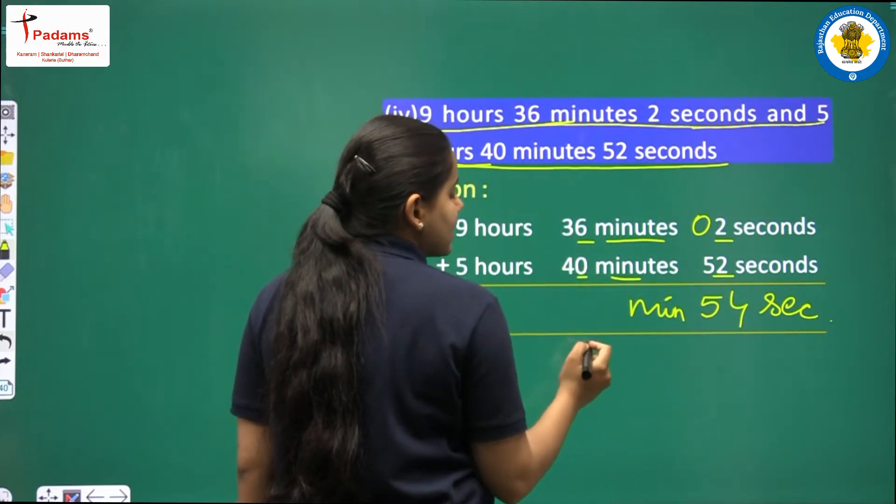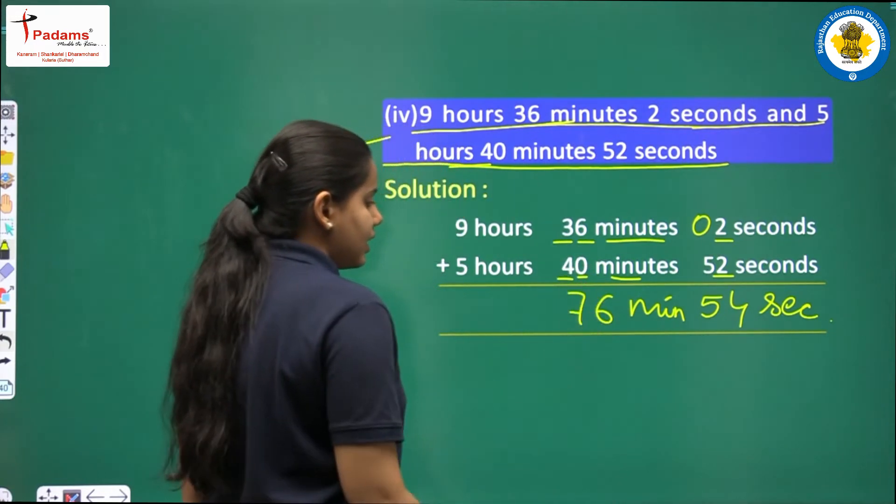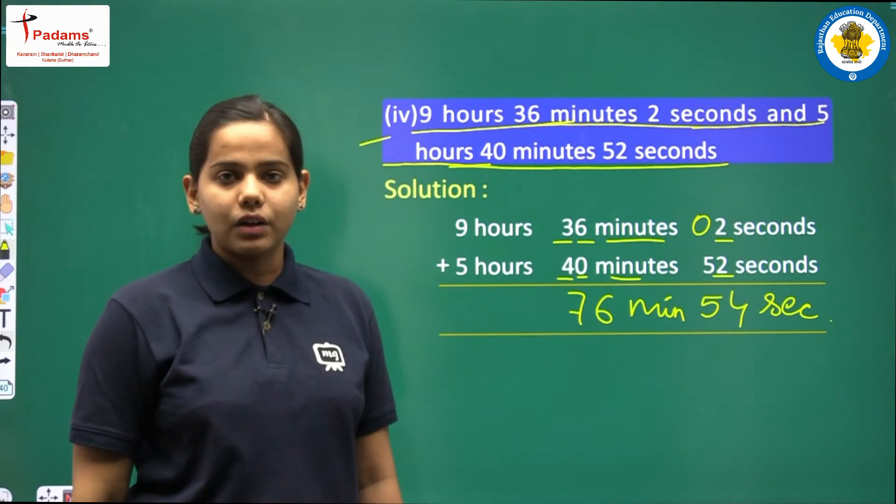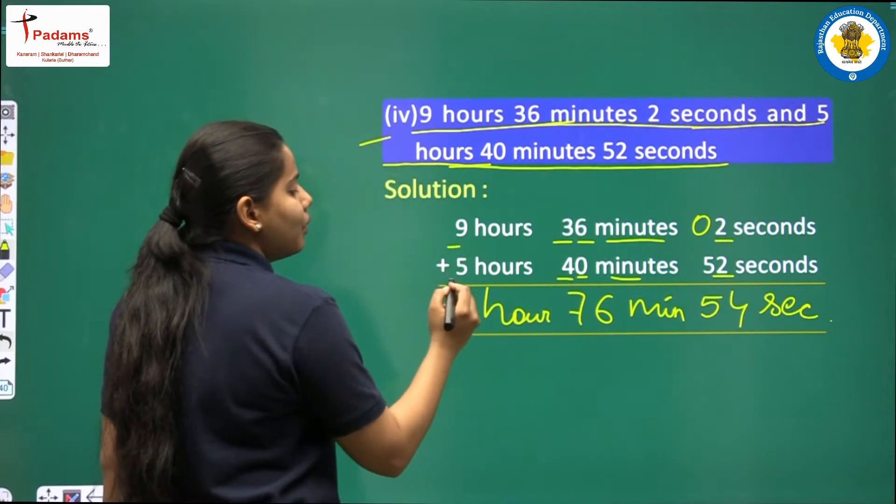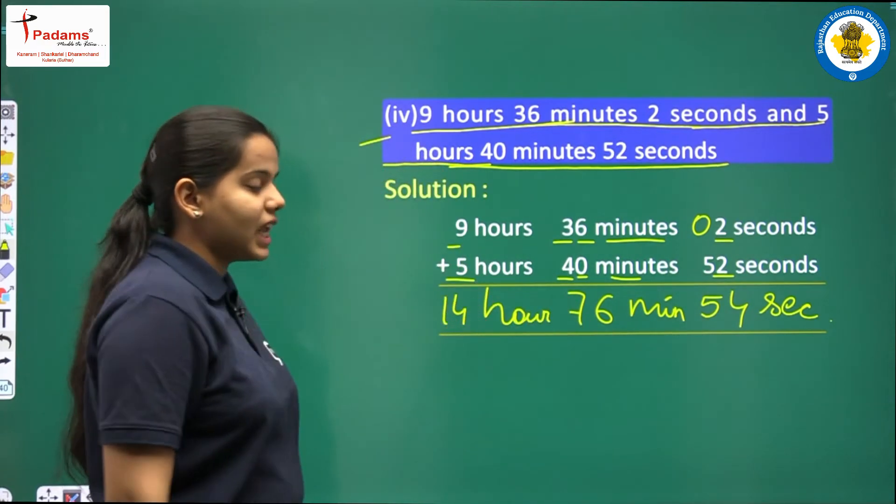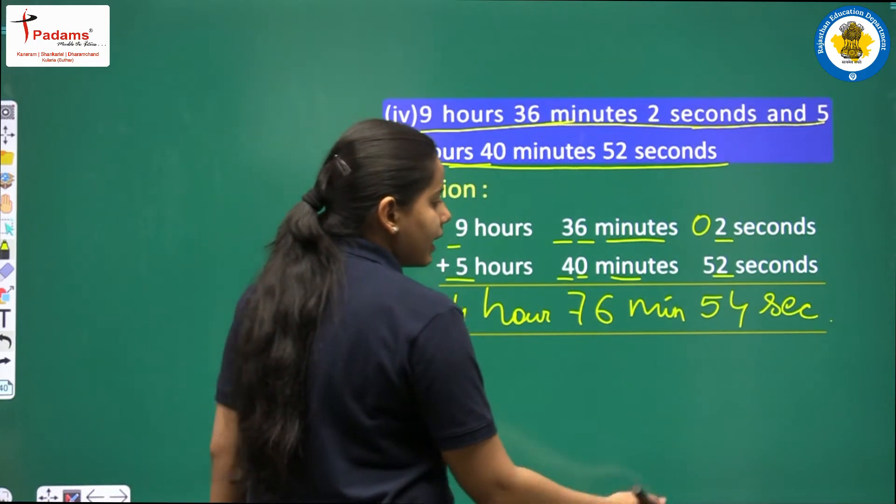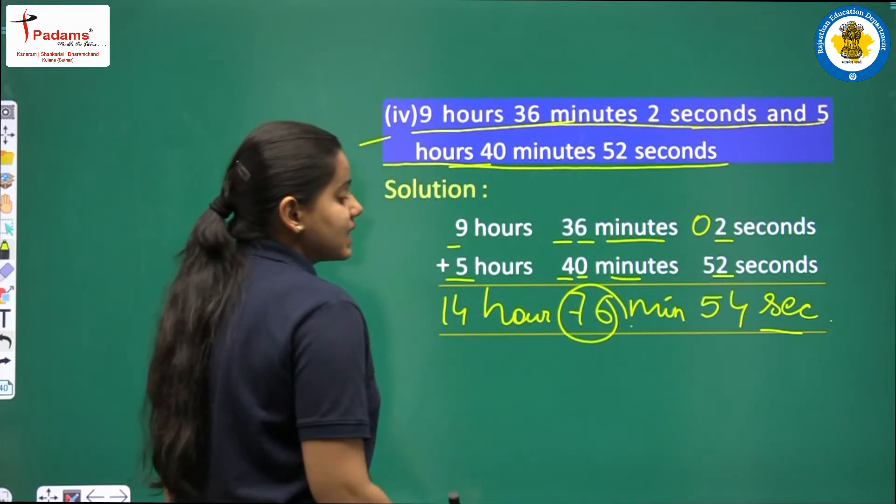Here also 6 plus 0 is 6 only. 3 plus 4 is 7. Here we have got 76 minutes. You know this we have to convert. First we will solve for hours then we will convert. 9 plus 5 is equal to 14. Now this is not our final answer. Because you can see seconds is less than 60 but minutes is more than 60.